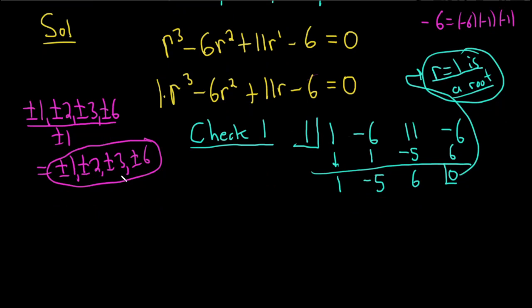So that means that we can take this and write it as follows. So r cubed minus 6r squared plus 11r minus 6, and that's equal to, we can write this as r minus 1. That's because 1 is a root. And then you use this to get the rest.